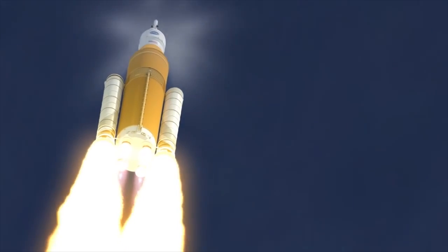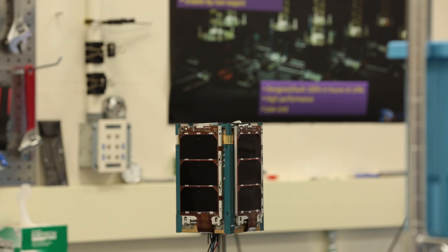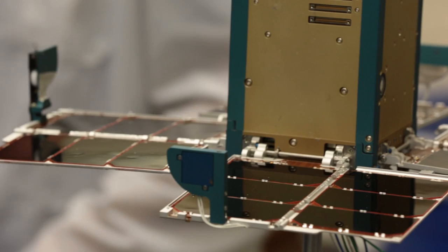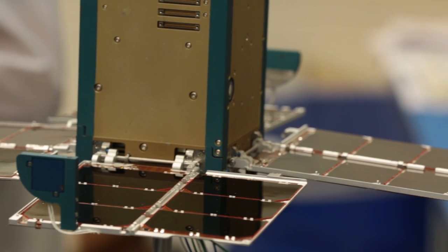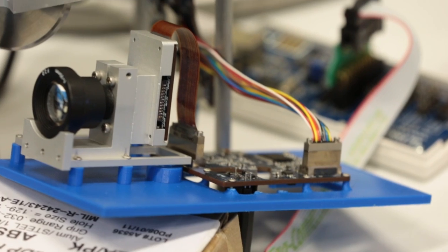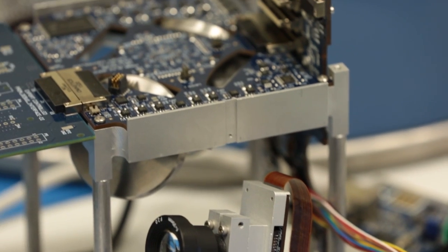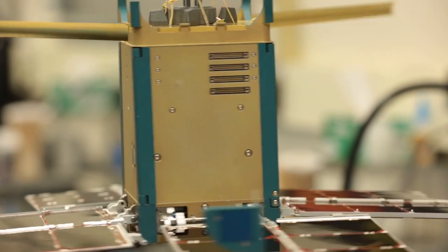A CubeSat is a small satellite that comes in a unit called a U, which is a 10-centimeter cube and is typically in the range of around a kilogram to a kilogram and a half per U.